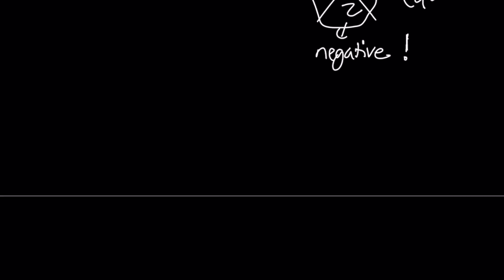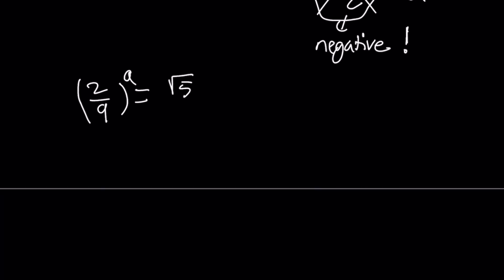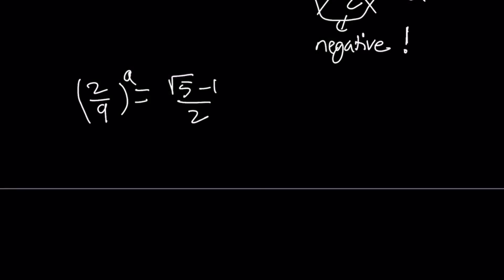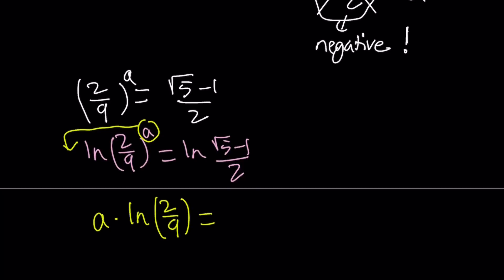How do you solve this? Let's rewrite it: 2 over 9 to the power a equals root 5 minus 1 over 2. At this point, how do you solve this equation? You have to get rid of the exponent. So let's take the natural logarithm of both sides. ln of 2 over 9 to the power a equals ln of root 5 minus 1 over 2. We can bring this a down here. Now we get a times ln 2 over 9 equals ln root 5 minus 1 over 2. And by division we can find the value of a. So a becomes ln root 5 minus 1 over 2 divided by ln 2 over 9.